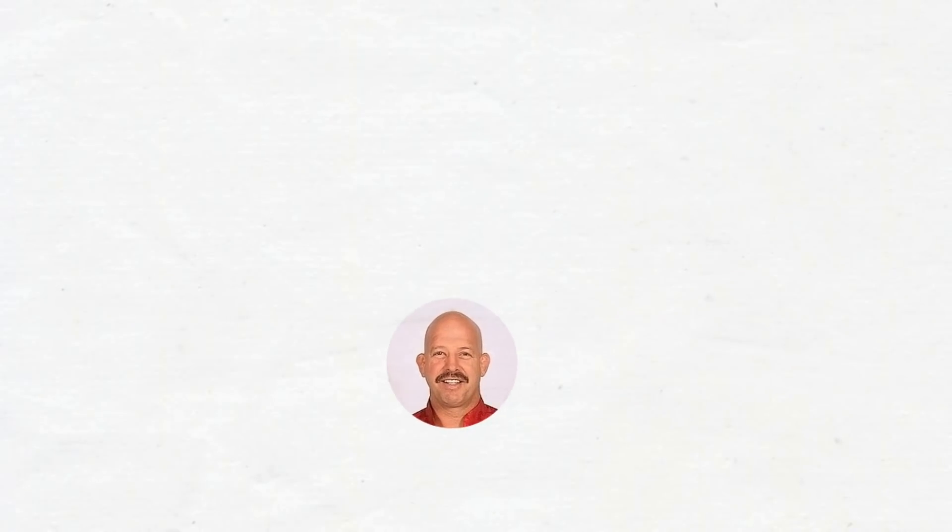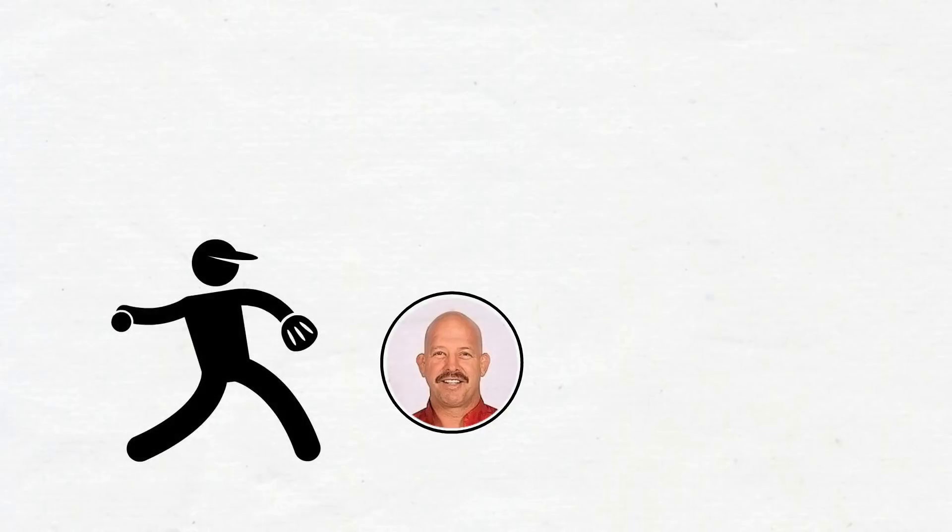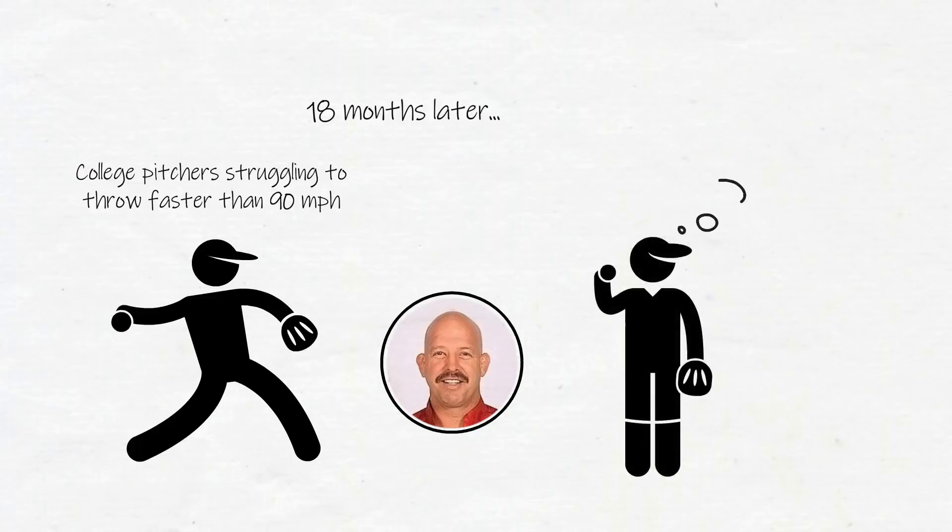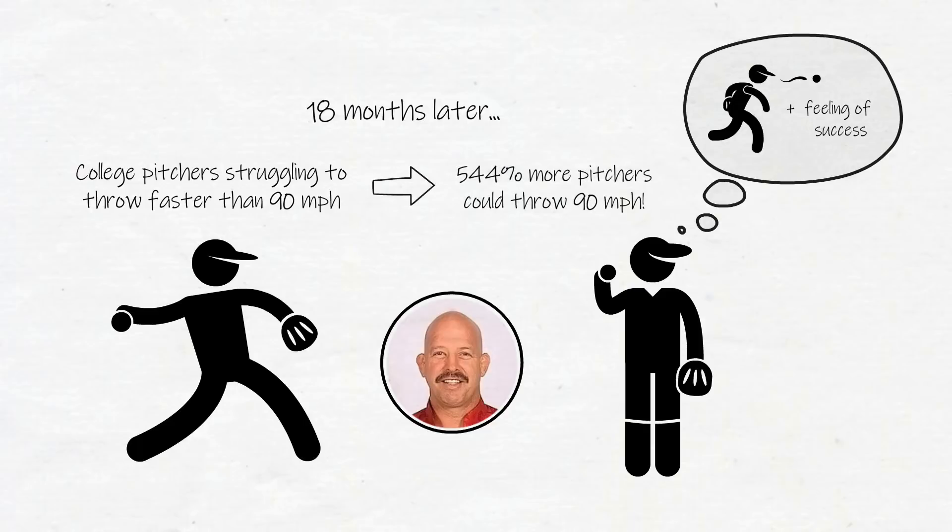Co-author Matt Fury used a similar technique on a group of college pitchers at a baseball training facility who were struggling to pitch faster than 90 miles an hour. 18 months after getting the pitchers to see themselves pitching 90 miles an hour and layering the feeling of success onto that image, the number of players who could throw 90 miles an hour went from 18 to 98.